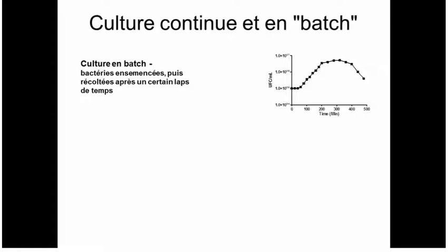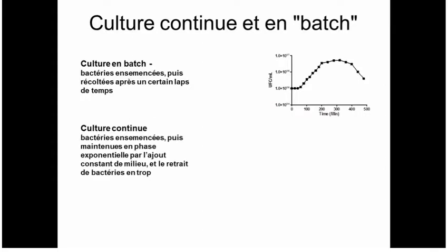Sometimes, for a lot of work in a research laboratory — like producing a recombinant protein or doing a plasmid prep — batch culture is perfectly fine. But for some applications you might want bacteria growing in the exponential phase for longer. The way to do this is to continually add fresh medium and continually take out some bacteria. This setup is called a chemostat, because the chemical environment is static.